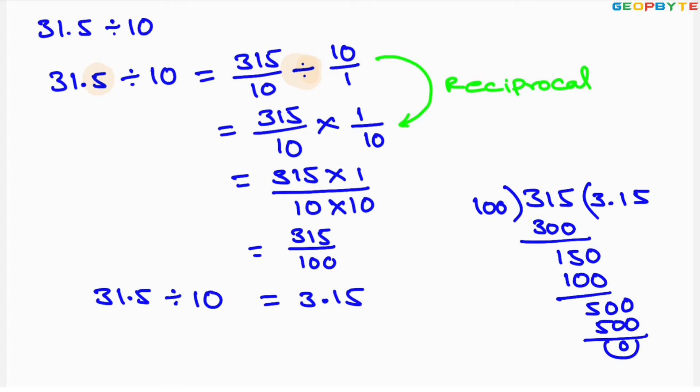Whenever we are dividing any decimal number by 10, the decimal point is shifted towards the left by one position. So in 31.5, dividing by 10 shifts the decimal point left by one position, giving us 3.15.